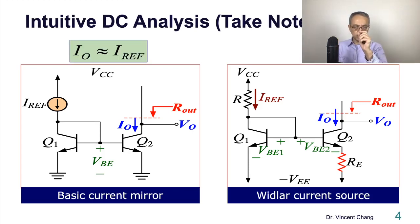Let's do an intuitive DC analysis first. For the left-hand side, the output current is approximately equal to reference current depending on the impact of finite beta or the base width modulation effect of the bipolar transistor. On the right, what's your intuitive feeling? What would you describe the relationship between IO and the IREF?